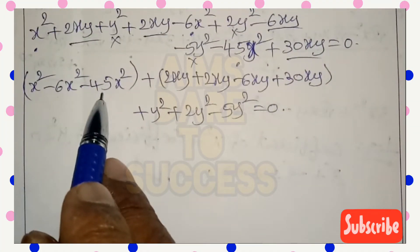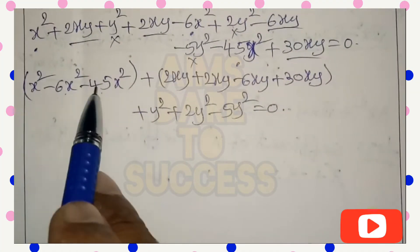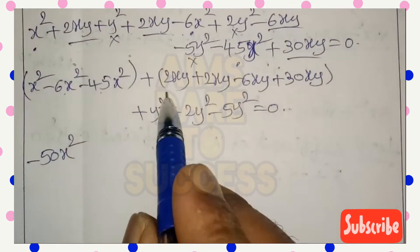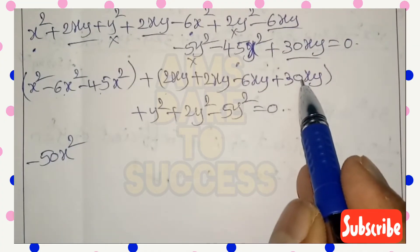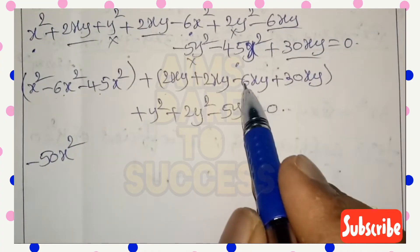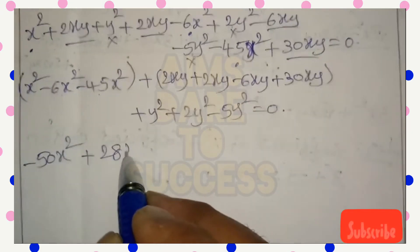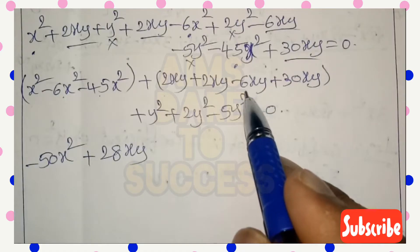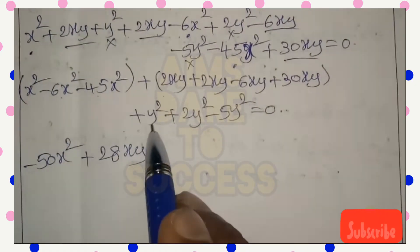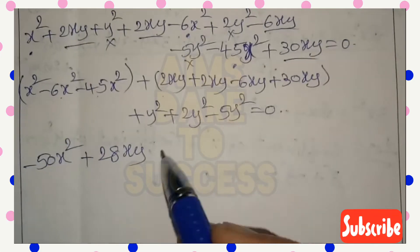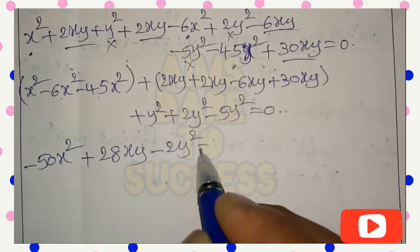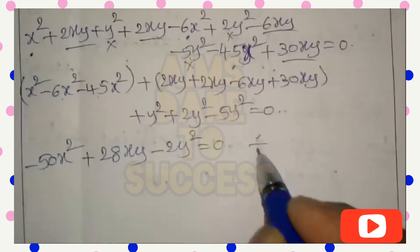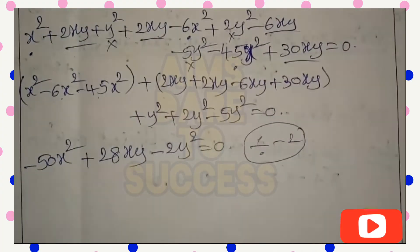So we have -50x² + 28xy - 2y² = 0. Dividing everything by -2: 25x² - 14xy + y² = 0.